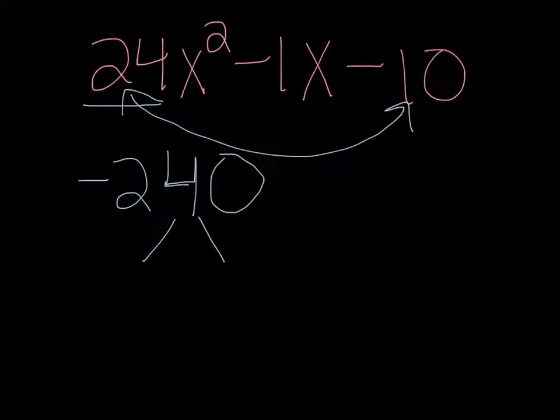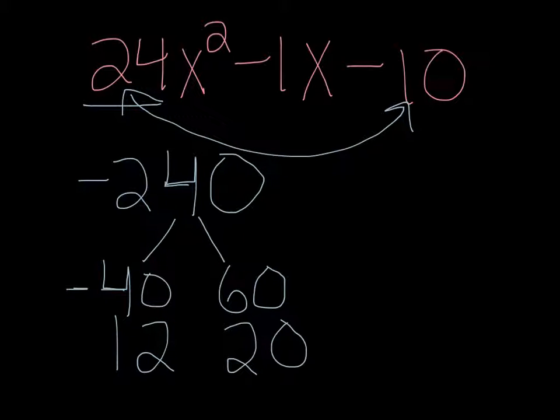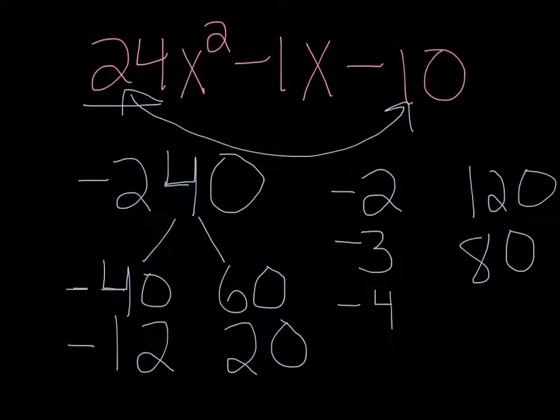And then I look for factors of 240. Factors just mean two numbers that multiply to be this number. So for example, 40 and 60 equal 240, but one of them would have to be negative to get the negative 240. Another pair would be 12 and 20. Again, make one of them negative. 2 will definitely go into 240, so 2 and 120. One of them should be negative. 3 goes in, 3 and 80, 4 and 60.